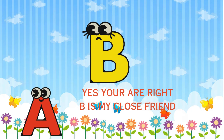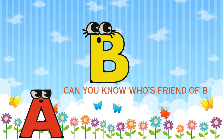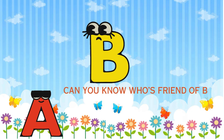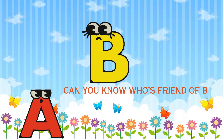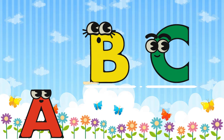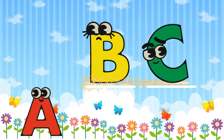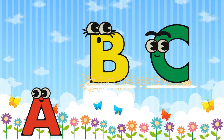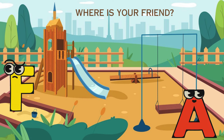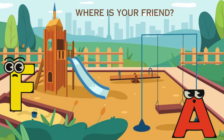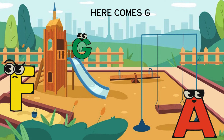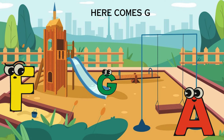Yes, you are right. B is my close friend. Can you know whose friend of B? G. C. Where is your friend? Here comes G.